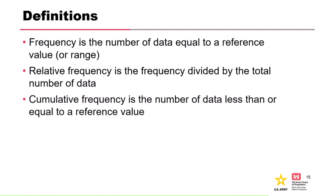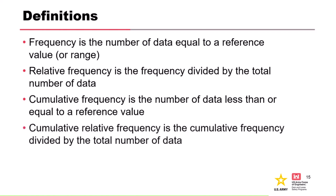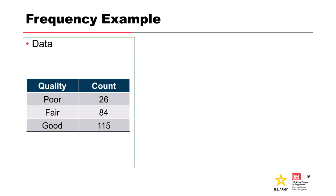Cumulative frequency is the number of data values less than or equal to a reference value. This concept recurs when we talk about distributions — cumulative frequencies and probabilities always refer to less-than-or-equal-to conditions. Cumulative relative frequency is the cumulative frequency divided by the total number of data.